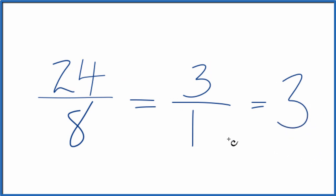So in answer to our question, the fraction 24 eighths equals 3 over 1 or just 3. And all of these have the same value, they're just written as different representations.